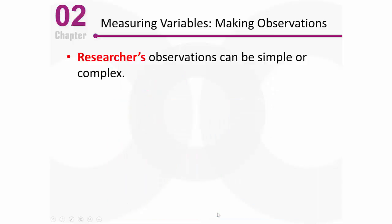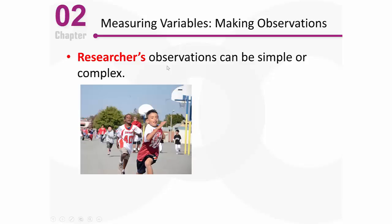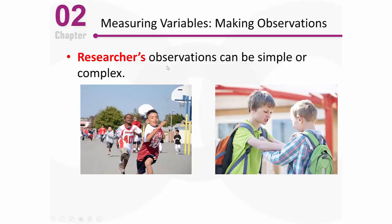Now let's talk about making actual observations — specifically the researcher making observations rather than relying on self-report from subjects. Researcher observations can be very simple or very complex. Imagine a researcher studying children on a playground, observing whether boys play with boys, girls with girls, or in mixed groups — usually pretty easy to determine. But now think about something more complex, like studying bullying.